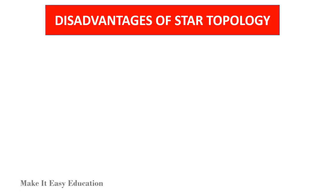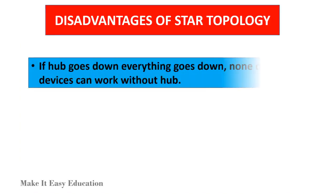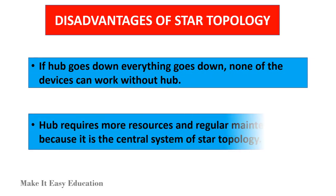Disadvantages of star topology: If the hub goes down, everything goes down — none of the devices can work without the hub. The hub requires more resources and regular maintenance because it is the central system of the star topology.